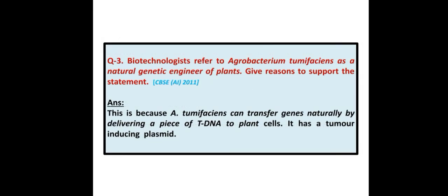Biotechnologists refer to Agrobacterium tumefaciens as a natural genetic engineer of plants. Give reasons to support the statement. Answer: This is because Agrobacterium tumefaciens can transfer genes naturally by delivering a piece of T-DNA to plant cells. It has a tumor-inducing plasmid.